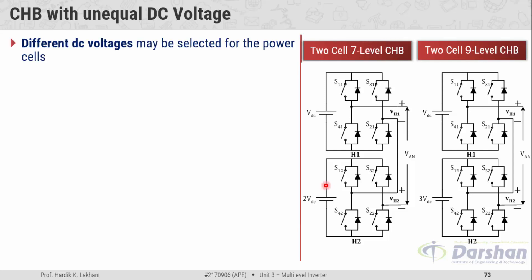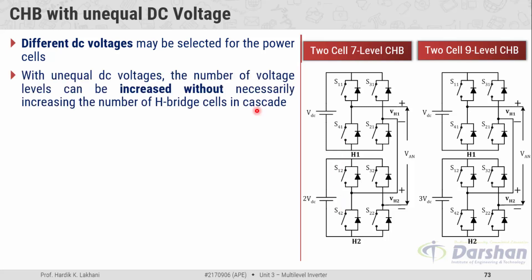By following the same principle, we can produce nine levels across a nine-level CHB having unequal DC voltage sources. Different DC voltages may be selected for the power cells. In the CHB with unequal DC voltage, we can use different magnitudes of DC supply for H1 and H2. With unequal DC voltages, the number of voltage levels can be increased without increasing the number of H-bridge cells — that is the key benefit of this unequal DC voltage concept.